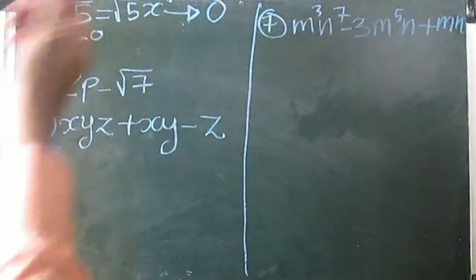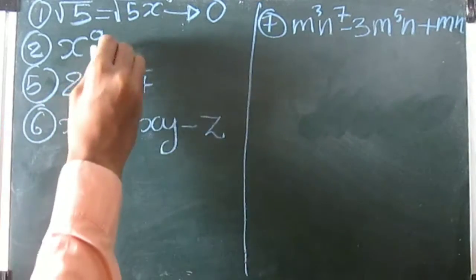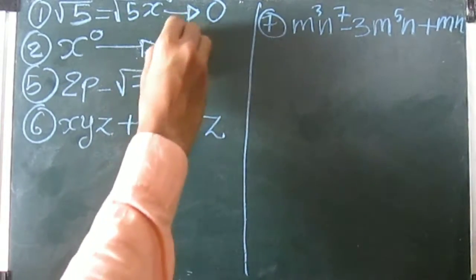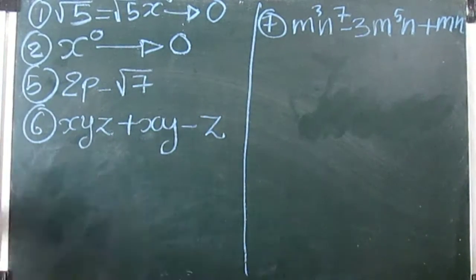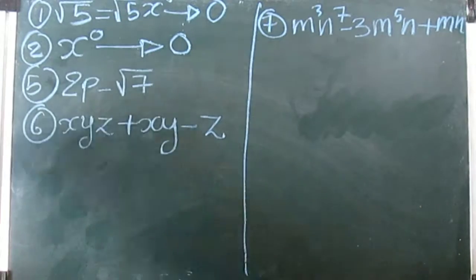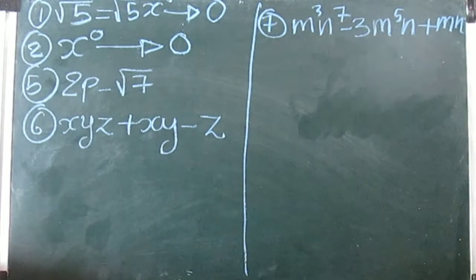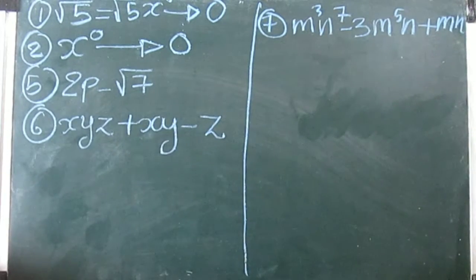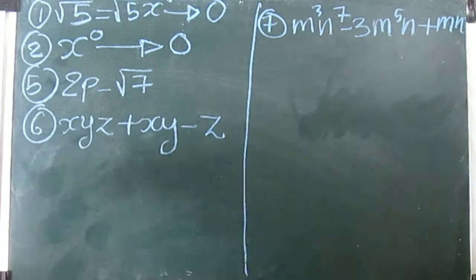Now we go for question number two. It is trivial and we have done this — x raised to zero. The highest power is zero, so the degree is zero. After the second, I went for the fifth one; the third and fourth are much simpler — you are just supposed to write the highest power.